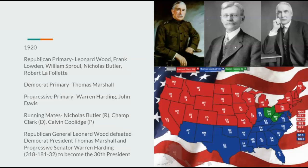Going on to the 1920 Election, Republicans would nominate Leonard Wood and Nicholas Butler. Democrats would renominate Thomas Marshall and Champ Clark. Progressives would nominate Warren Harding — a Progressive in this timeline — and Calvin Coolidge. Republican General Leonard Wood would defeat Democrat President Thomas Marshall and Progressive Senator Warren Harding. Marshall would lose because he really wouldn't get anything done. It's really hard to beat a general in this country — if you're a general or an astronaut, you're never going to lose.